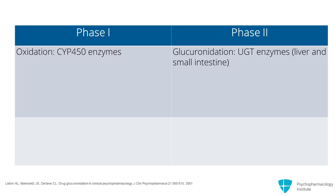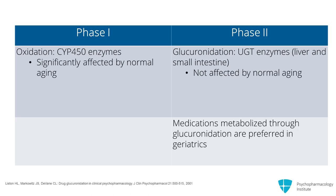Drug metabolism occurs by phase 1 oxidation processes involving cytochrome P450 enzymes, and/or phase 2 conjugation processes involving UGT enzymes, the most common being glucuronidation. The major actions of these enzymes are in the liver and small intestine. In general, oxidation reactions are significantly affected by normal aging, whereas glucuronidation reactions are not, so that medications metabolized through glucuronidation are preferred in geriatrics.